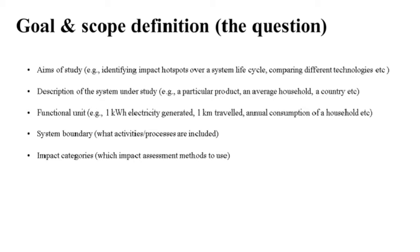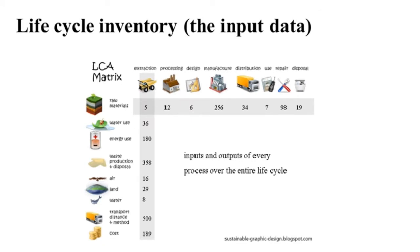The second step is life cycle inventory analysis, or LCI. The aim of this stage is to quantify and compile all the physical inputs, such as different resources required by a given product system, and the outputs, such as products, emissions, and waste generated from the same system. This is usually the most labor-intensive and time-consuming stage, as there's a lot of number crunching needed. Essentially, you're building a very big matrix of inputs and outputs.